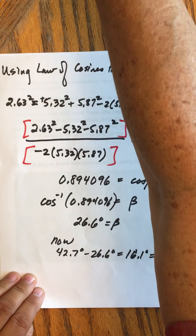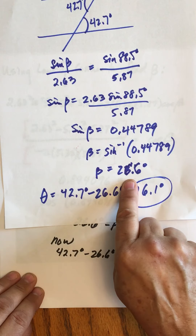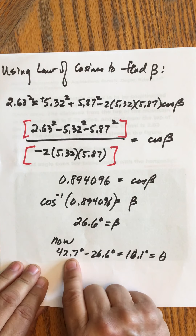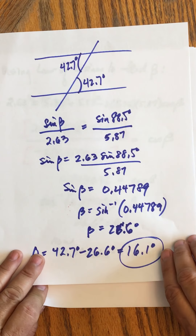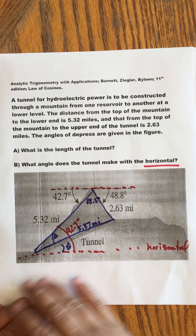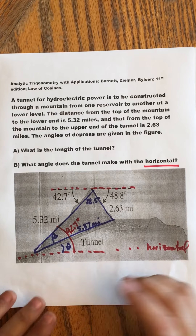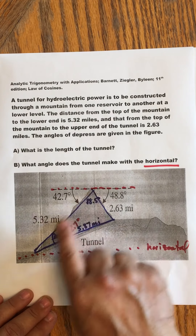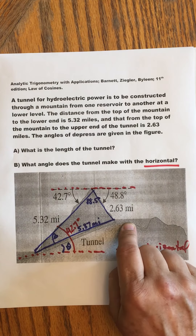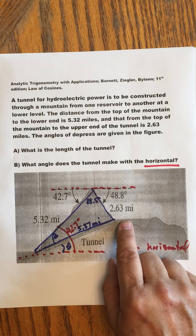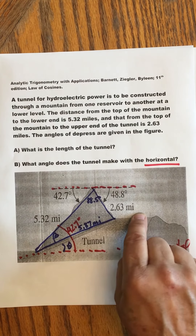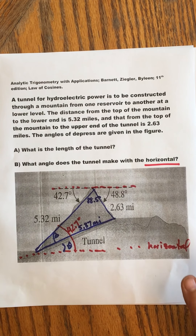Either way you get beta = 26.6°, then theta = 42.7° − 26.6° = 16.1°. That's the application of law of cosines — and law of sines at one point. It's very practical: the two slant distances are measurable directly, but the tunnel length and angle are not. If you haven't tunneled through yet, this tells you exactly how far to go and at what angle. Thanks for listening.